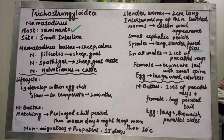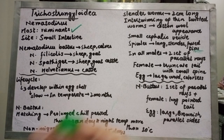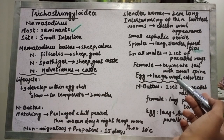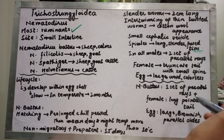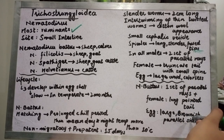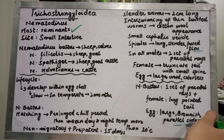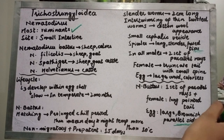The eggs of Nematodirus battus are large, brownish, and have parallel sides. In contrast, the eggs of other Nematodirus species are large, ovoid, and colorless.